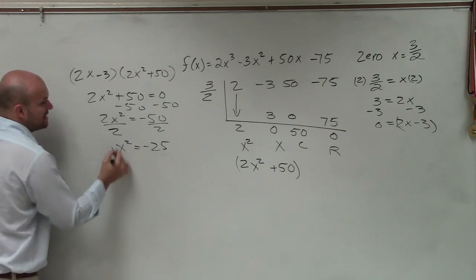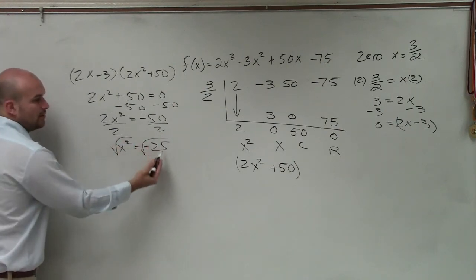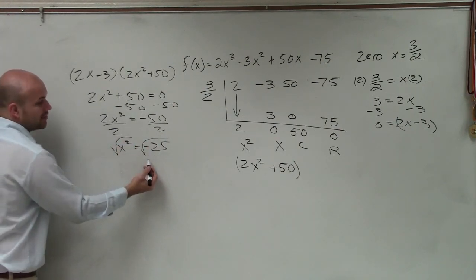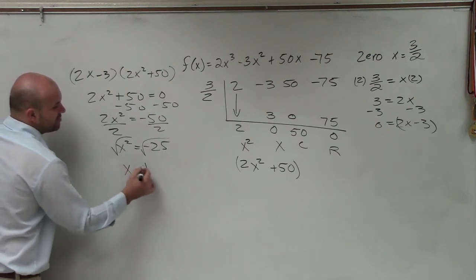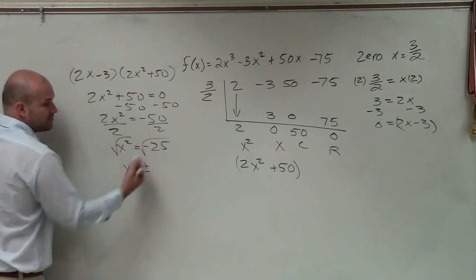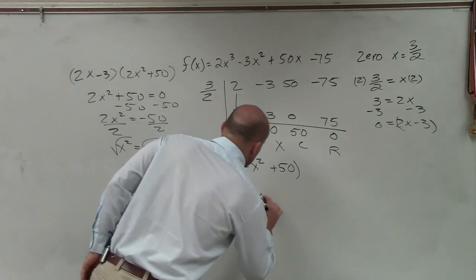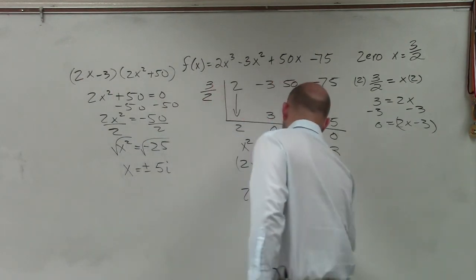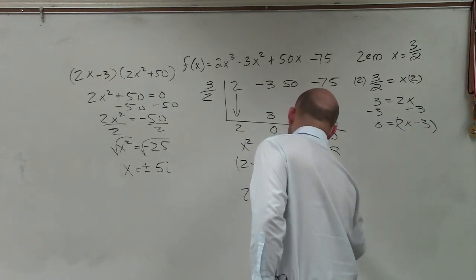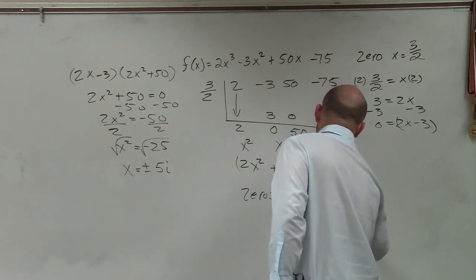All right, so now that we're going to be taking the square root of a negative number, we know that taking the square root of a negative number, now we have to include i. But x equals plus or minus, introduce the square root, plus or minus 5i. So therefore, your zeros are going to be plus or minus 5i and 3 halves.